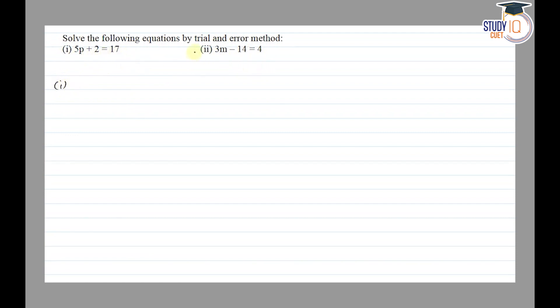In trial and error method, we will put variable values randomly: 0, 1, 2, 3, and we will put them in the equation to see if it satisfies or not. Whatever value of variable p satisfies this equation, that is the solution.